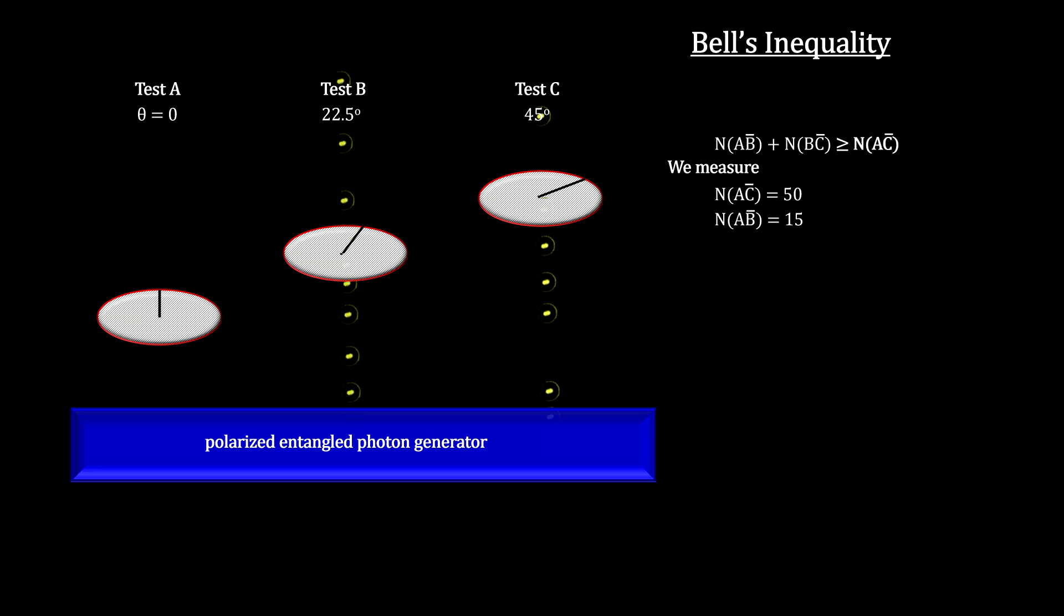The entangled photons then entered lens C, polarized at 45 degrees. 85 passed, and 15 were blocked, so the number in B not C was 15.